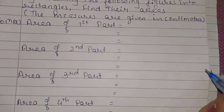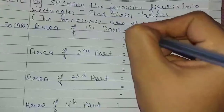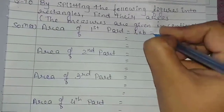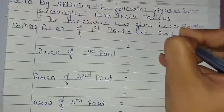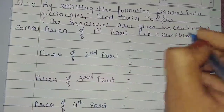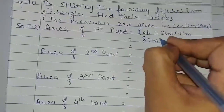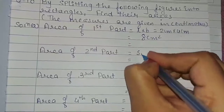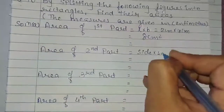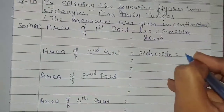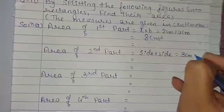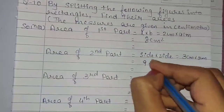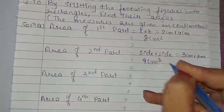Area of first part equals to length multiplied by breadth, which equals 2 cm multiplied by 4 cm, and that equals 8 cm square. Area of the second part equals to side multiplied by side because the second part is a square. That equals 3 cm multiplied by 3 cm, which equals 9 cm square.